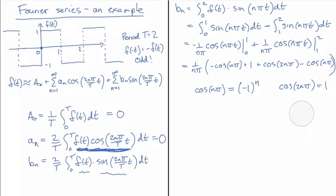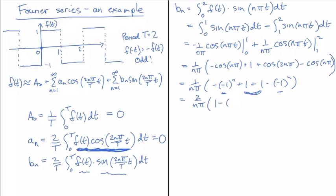So minus 1 to the n for the cosine nπ and 1 for the cosine 2nπ. So now we have 1 over nπ minus minus 1 to the n plus 1 plus another 1 from the cosine 2nπ minus minus 1 to the n. And so I can rearrange this a little bit to get 1 over nπ and there's 2 here and there's 2 of these. So I can factor 2 out in front and write this as 1 minus minus 1 to the n. So I could either leave it as bₙ equal 2 over nπ 1 minus minus 1 to the n.